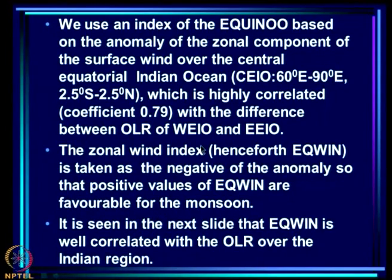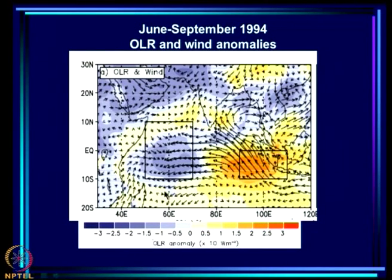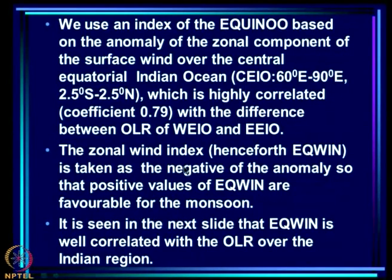We use an index of EQUINOE based on the anomaly of the zonal component of surface wind over the central equatorial Indian Ocean, which is between the two boxes, and which is highly correlated with the difference between the OLR of WEIO and EEIO. The zonal wind index, called EQUINOE, is taken as the negative of the anomaly so that positive values of EQUINOE are favorable for the monsoon.